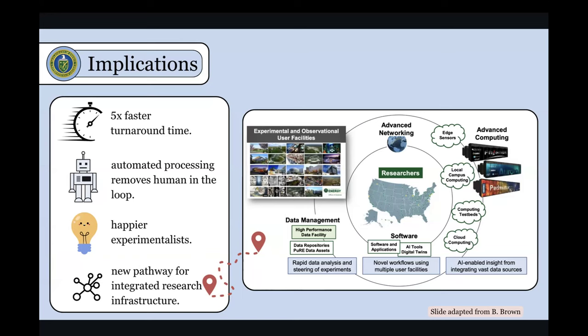So moving on to sort of the broader implications of this, we've implemented this streaming protocol that gives a faster turnaround time. But I think more broadly and more importantly, it removes the human in the loop from a particular step of this pipeline. And that leads to happier experimentalists. In general, I used to be an experimentalist. I hated having to click an extra button that I didn't have to while I was running this time sensitive experiment. And I only have a very limited time on this machine to get some cool results.